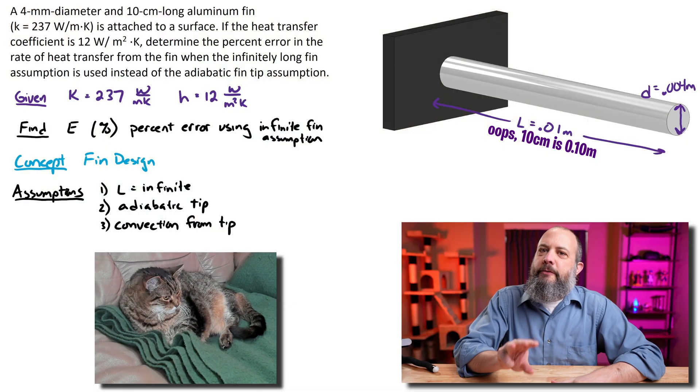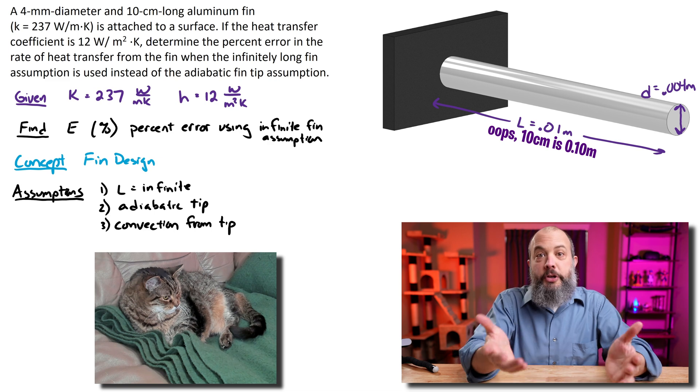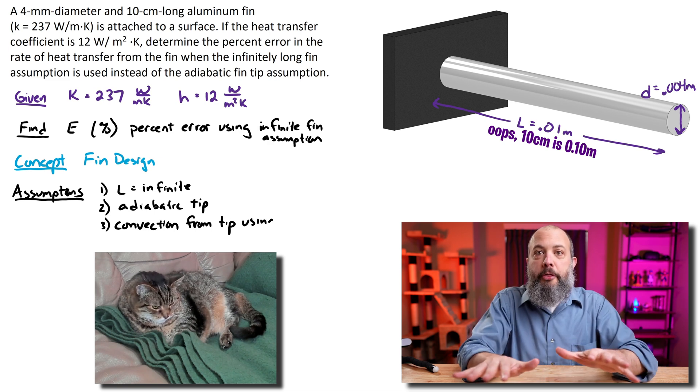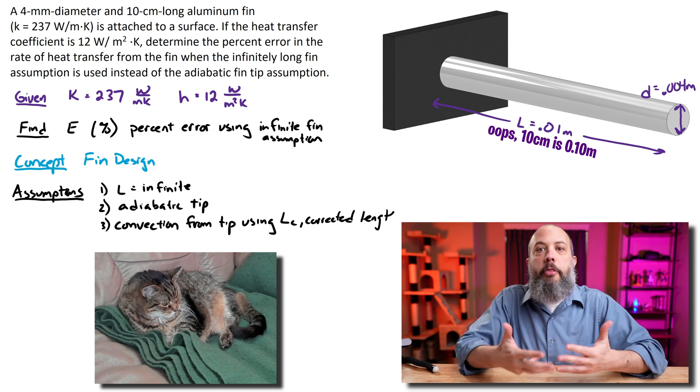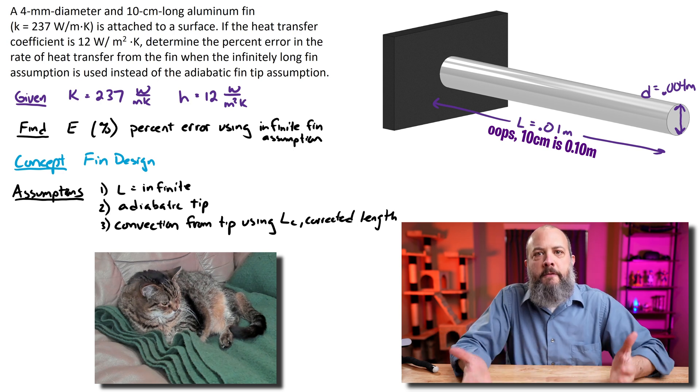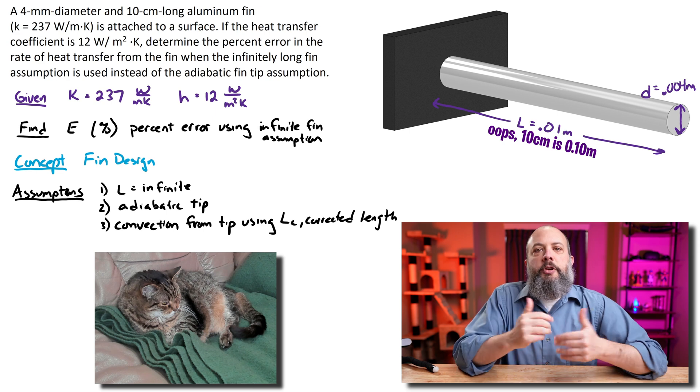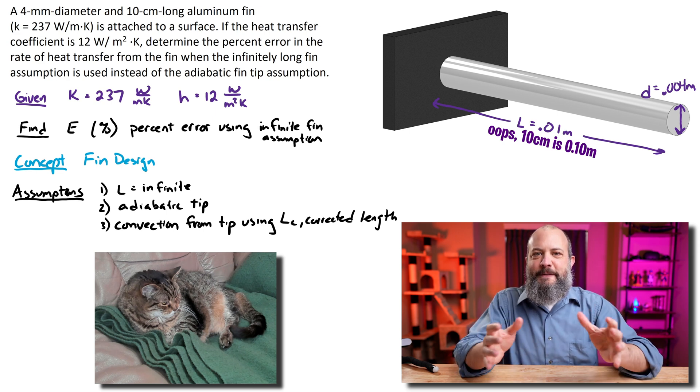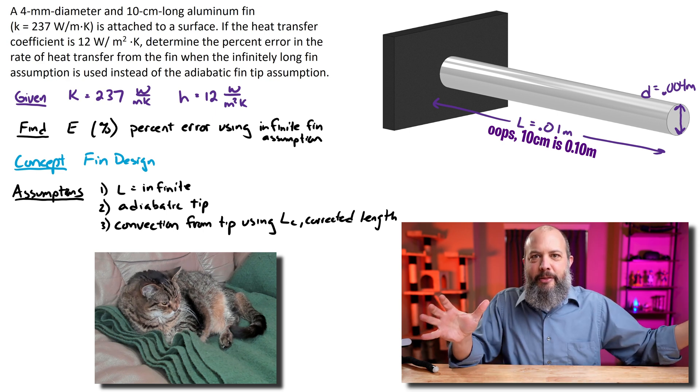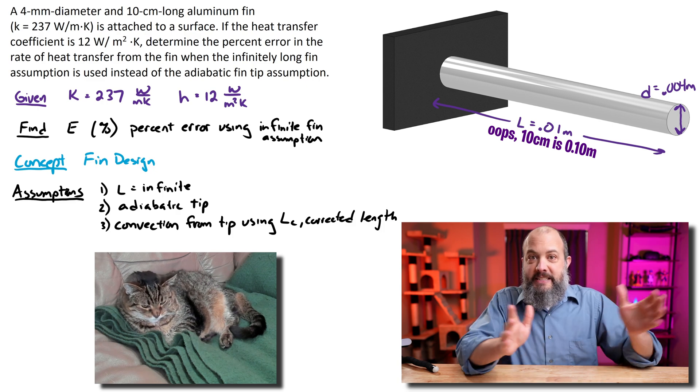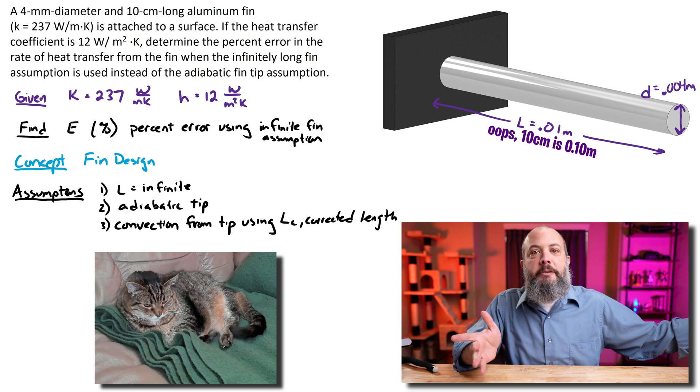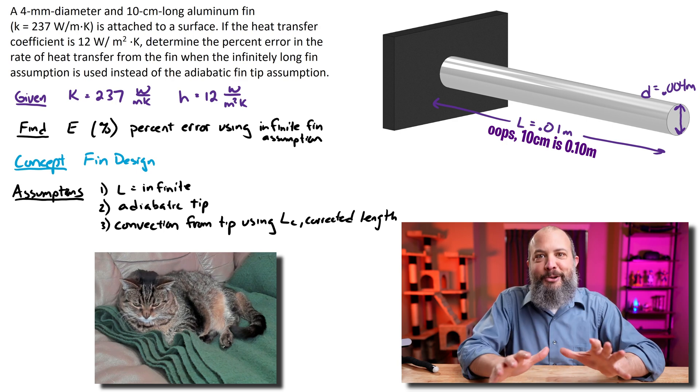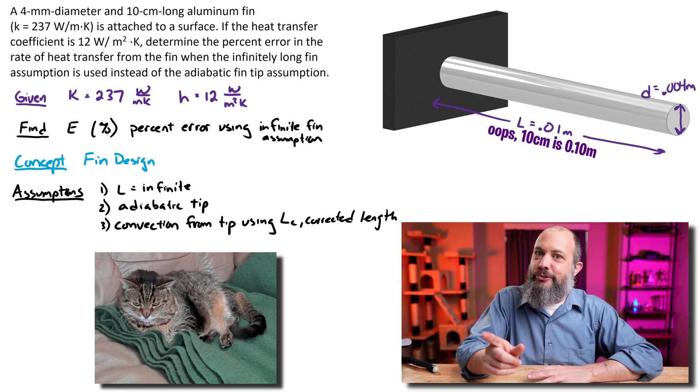I already said we're going to make three different assumptions for this problem. When you're solving a fin design problem, you won't make all three. You're just going to choose one of these assumptions to make. But for this problem, I'm making all three just so you can see the three different versions of the fin equation. So first, I'm going to assume that the fin has infinite length. In this problem, we were given a length of 10 centimeters, but I'm going to assume that it's actually infinitely long. Clearly, that's not the most accurate assumption, but it is the easiest equation to use, which is why we make the assumption sometimes.